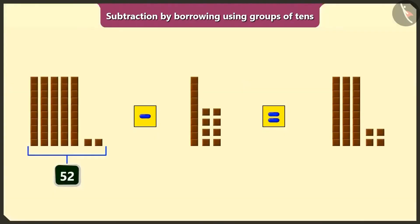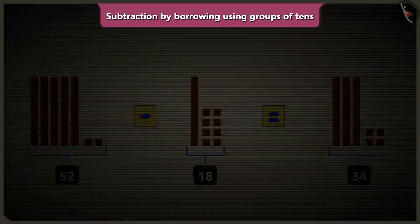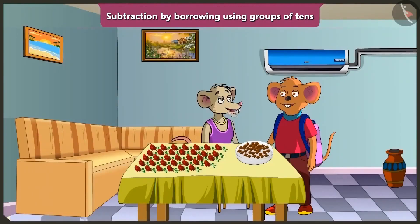So after eating 18 chocolates from 52 chocolates, we have 34 chocolates left. Now if we eat 15 more chocolates out of 34, how many chocolates would we have left?